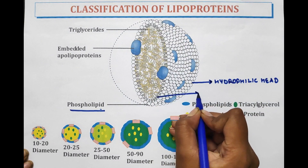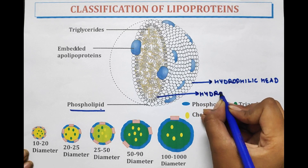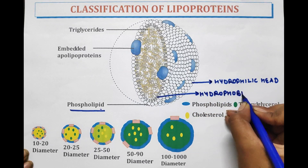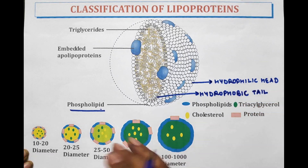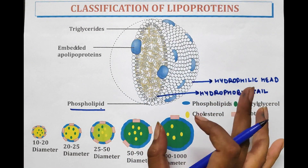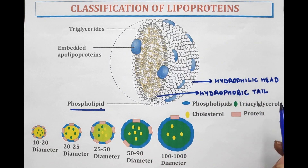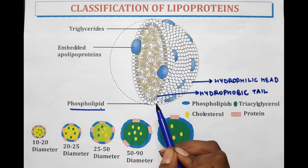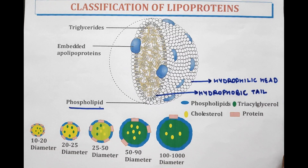The tail-like structures are the part of phospholipid which are known as hydrophobic tails. In the structure of phospholipid, the hydrophilic head is always facing towards the outward direction and the hydrophobic tails are on the inside. This hydrophobic lipid along with hydrophilic head and hydrophobic tail constitutes a phospholipid group.